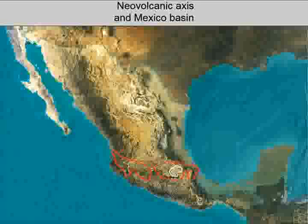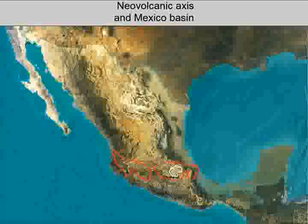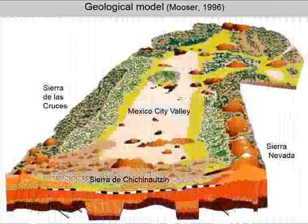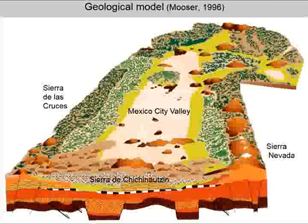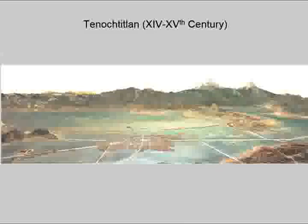Mexico City is located within the neo-volcanic transversal range that goes from west to east across the central part of the country. The geological context is 100% volcanic. The Mexico City Basin was originally an open valley draining towards the south. This valley was closed by volcanic eruptions that gave birth to the Chichinautzin Range, which formed a natural dam. Shallow lakes were formed that were progressively filled by eolian materials, mainly volcanic ashes produced by the eruptions of nearby large volcanoes of the Sierra Nevada, mainly Popocatépetl and Iztaccíhuatl.